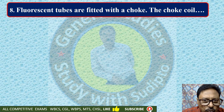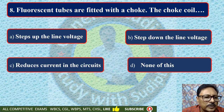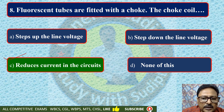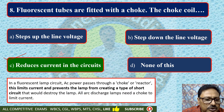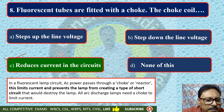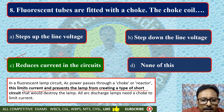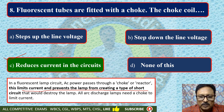Fluorescent tubes are fitted with a choke. The choke coil is used to — step up the line voltage, step down the line voltage, reduce current in the circuit, or none of these. The function of the choke coil is to reduce current in the circuit. In the fluorescent lamp circuit, AC power supply passes through a choke or reactor. This limits current and prevents the lamp from creating a short circuit that would destroy the lamp. The function of the choke is to reduce the current in the circuit to prevent damage.